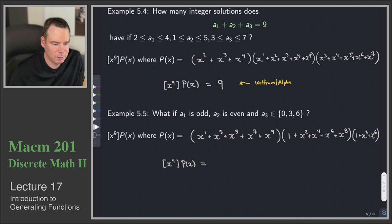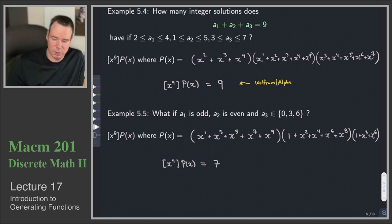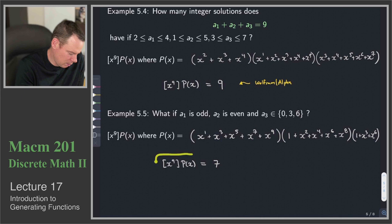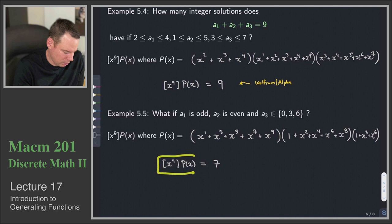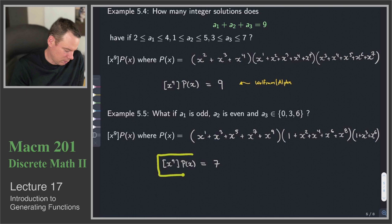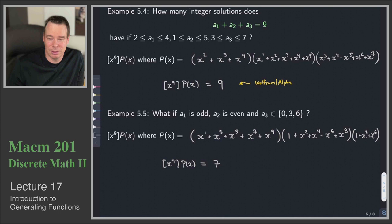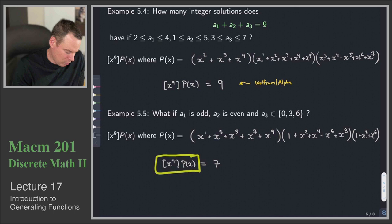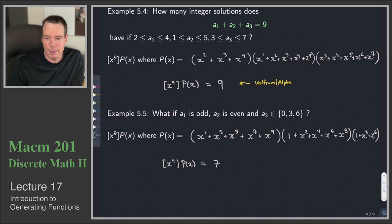The key point is that we have expressed our solution as the coefficient of x⁹ of the polynomial p(x) — that is our answer in its most important form. The numerical value is 7. Right now we can use a computer to compute it, but eventually we will learn techniques to find these values by hand.